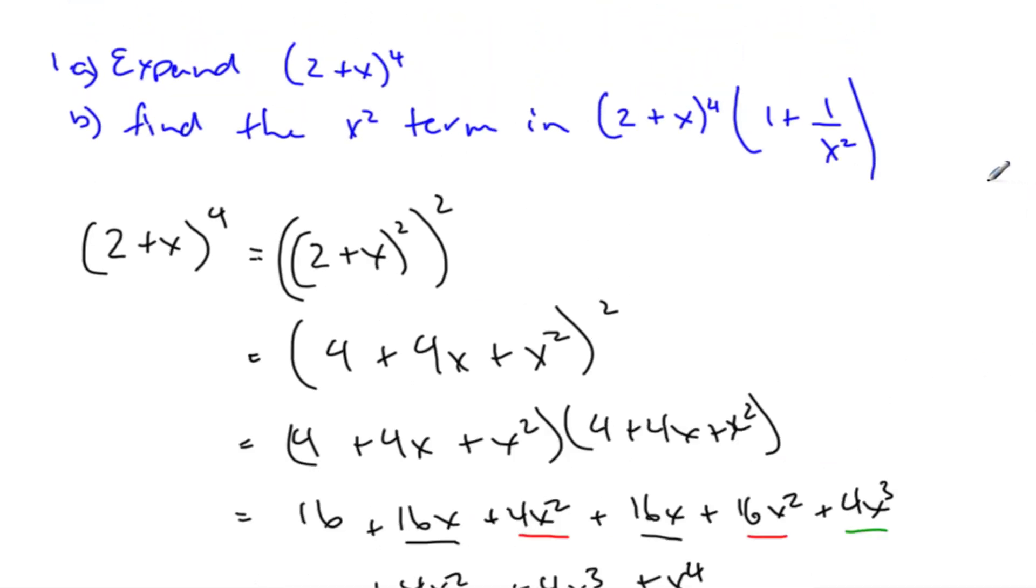The second part of the question now says, find the x^2 term when I multiply (2+x)^4 times (1 + 1/x^2). I just need to find this term.